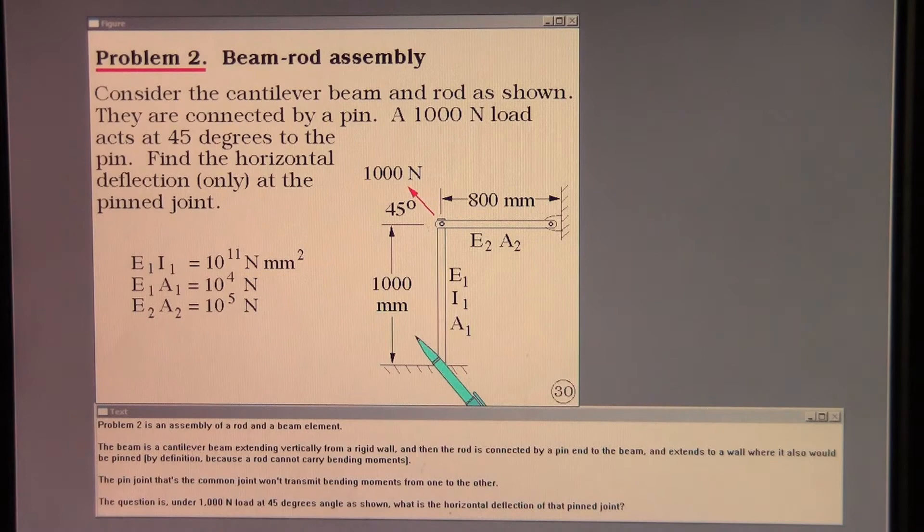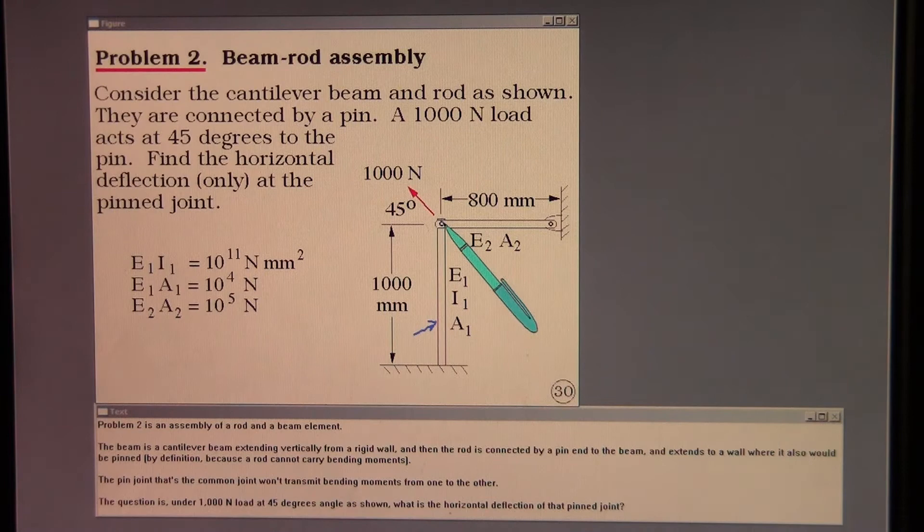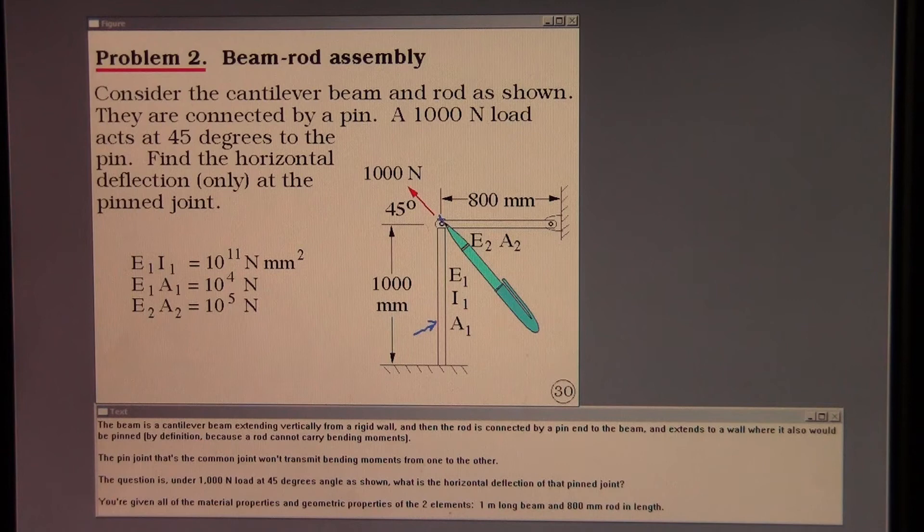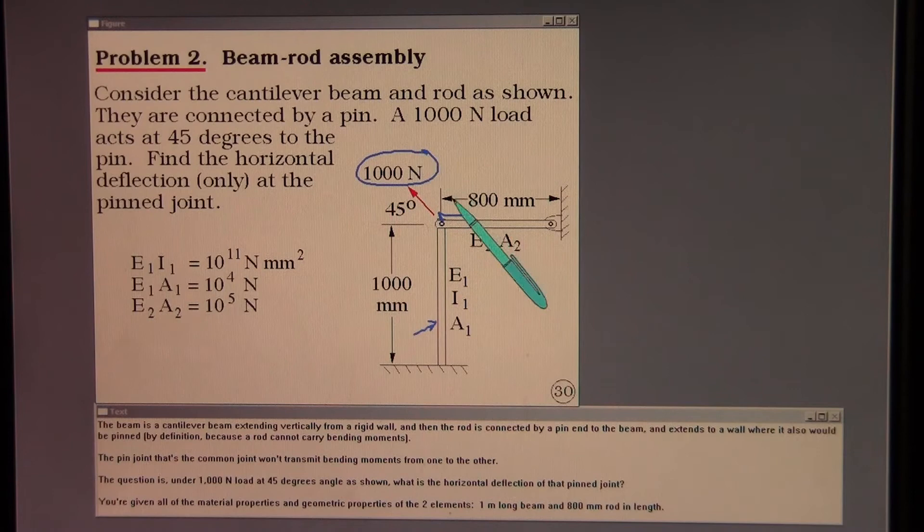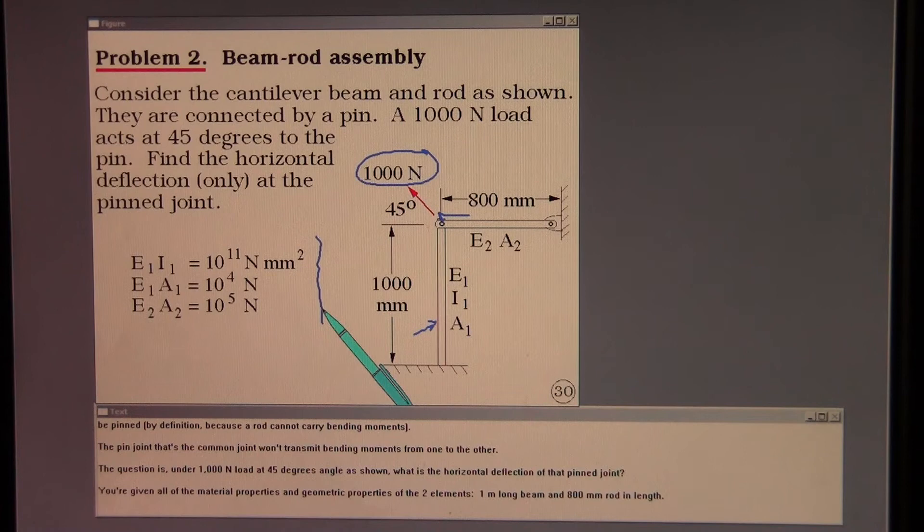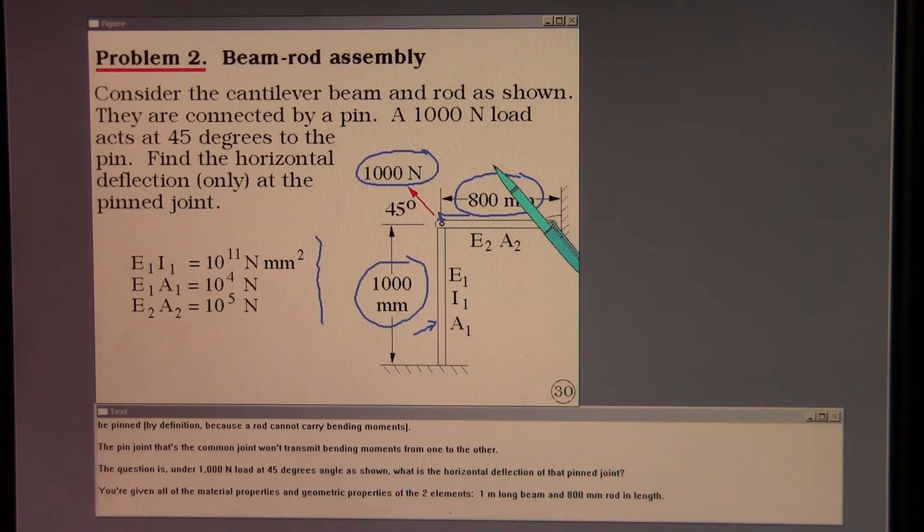The beam is a cantilever beam extending vertically from a rigid wall. And then the rod is connected by a pin end to the beam and extends to a wall where it also would be pinned by definition because a rod cannot carry bending moments. The pin joint won't transmit bending moments from one to the other. The question is under 1,000 Newton load at 45 degrees angle as shown, what is the horizontal deflection of that pin joint? You're given all of the material properties and geometric properties of the two elements. One meter long beam and 800 millimeter rod in length.